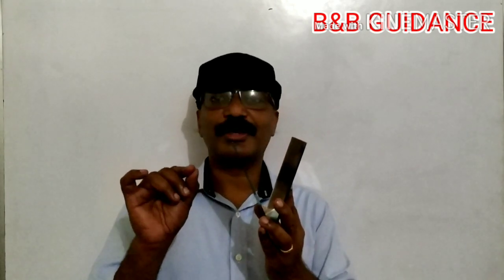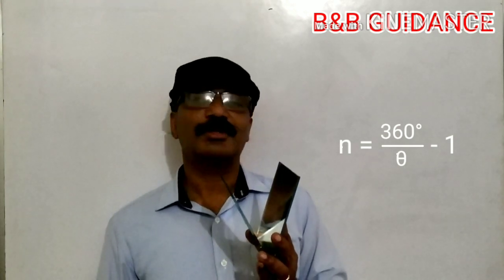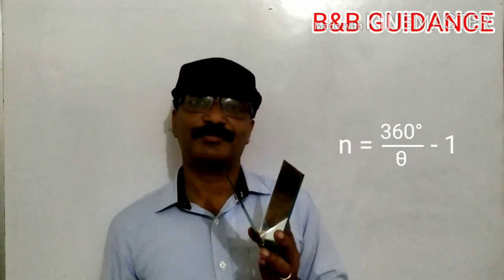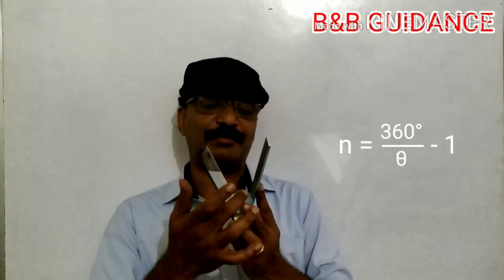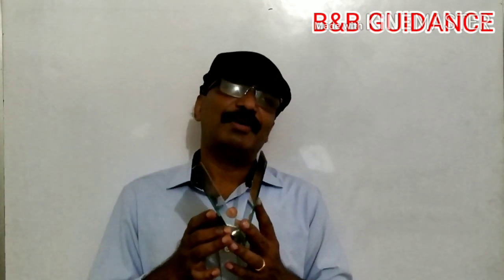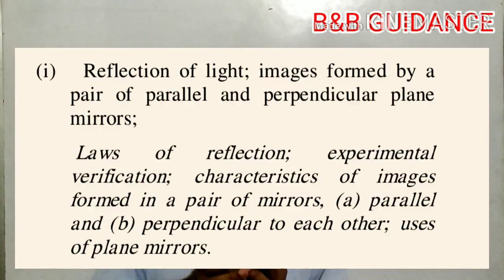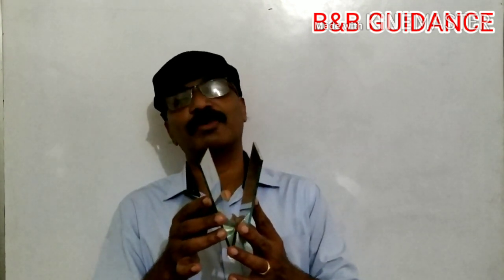In your textbook, you may come across a formula: number of images formed equals 360 divided by theta minus 1, where theta is the angle between the mirrors. But that formula is applicable only with certain conditions. Moreover, the formula is not in the ICSE syllabus, so I am not going to cover that. If the angle between the mirrors is smaller, a greater number of images will be found.